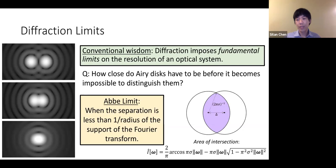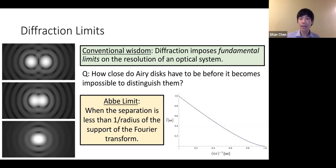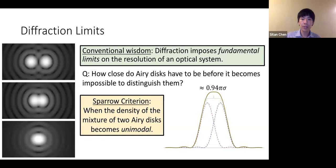The convolution goes to zero precisely when the two disks are disjoint, which requires them to be two times the radius apart. That's precisely the radius of the support of the Fourier transform. The Abbe limit dictates that as soon as the separation is less than one over the radius — the radius being π/σ — we conclude the separation is too small to distinguish the two Airy disks. So whereas the Rayleigh criterion gave a critical separation of 1.22π·σ, the Abbe limit gives exactly π·σ.